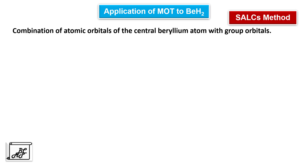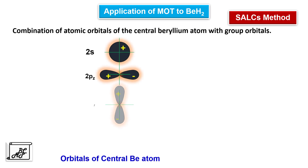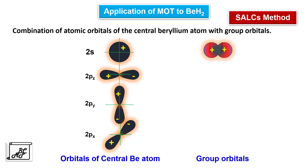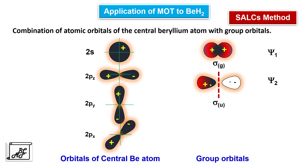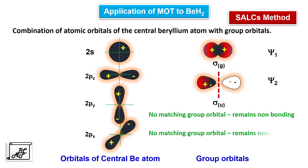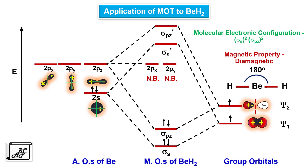In the case of beryllium, the central atomic orbitals are 2s, 2pz, 2py, and 2px. The group orbital ψ₁ will overlap with the 2s orbital, ψ₂ will overlap with the 2pz orbital, and there will be no matching symmetry orbitals for 2py and 2px — these will remain non-bonding. Accordingly, in the beryllium dihydride molecule, we have seen this MO diagram.